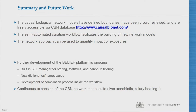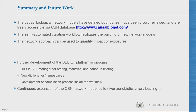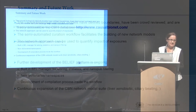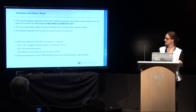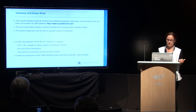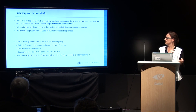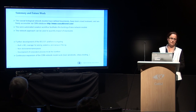In summary, these causal network models have defined boundaries and are freely accessible on the CBIN database — please do visit and look at the models. The semi-automatic curation workflow is now used to build new network models, and we use these models for quantitative impact assessment routinely. Further development on the BELIEF platform includes building a BELIEF manager for filtering and statistics, adding new namespaces and dictionaries beyond human, mouse, and rat, developing the compilation process inside the workflow, and continuously expanding CBIN with new network models.